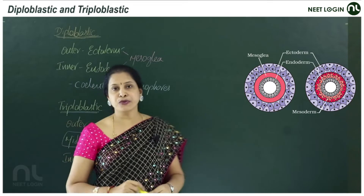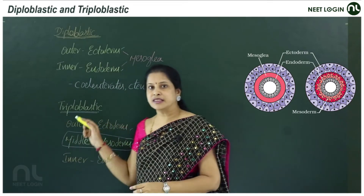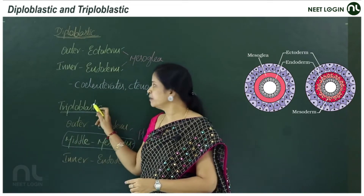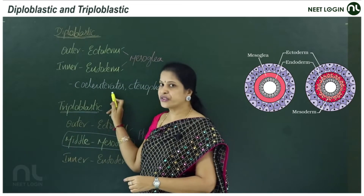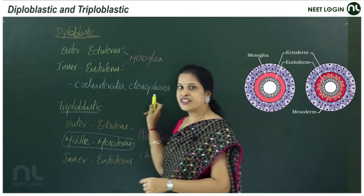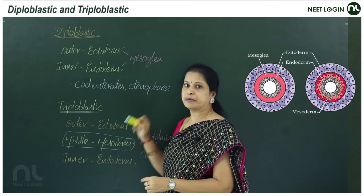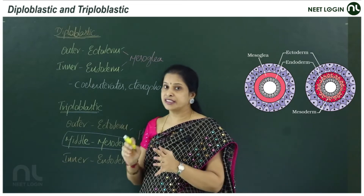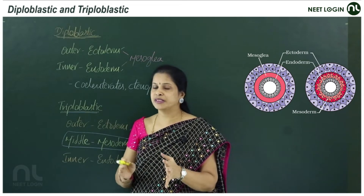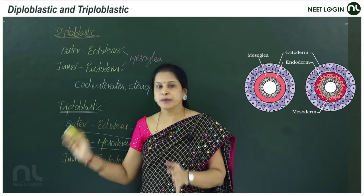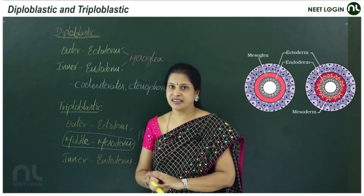Good examples of diploblastic animals are the phyla Cnidaria and Ctenophora. These are the two phyla that are diploblastic.